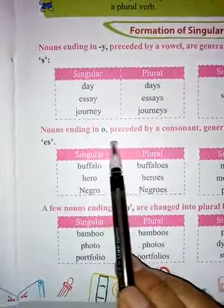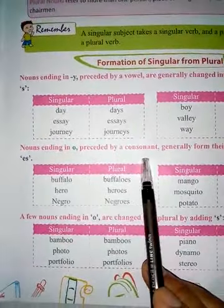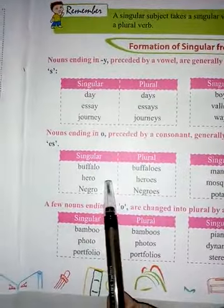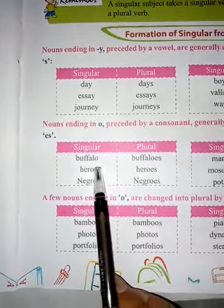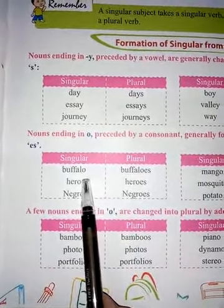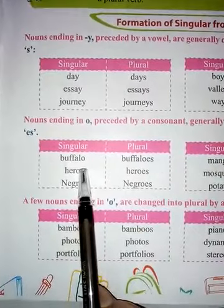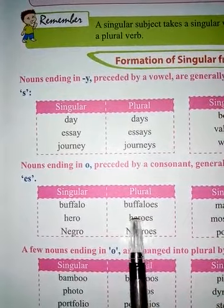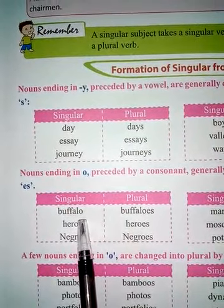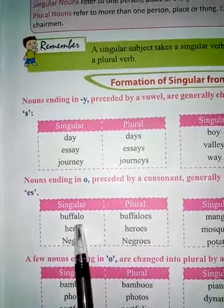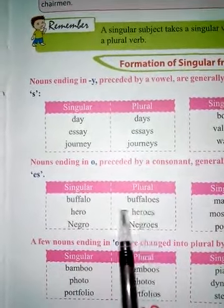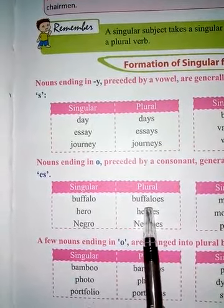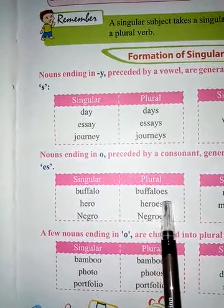Nouns ending in O preceded by a consonant generally form their plural by adding E-S. The word which ends in O, and before O if there is a consonant, in that case by adding E-S they form plural number. Suppose 'buffalo' — O is there, before O, L is a consonant. So here E-S will be added to form plural number: B-U-F-F-A-L-O-E-S.